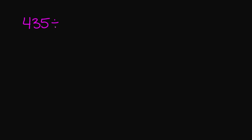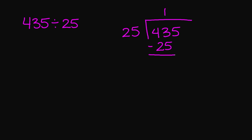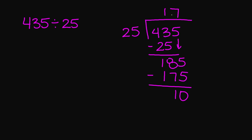Let's try 435 divided by 25. Let's set up the problem: 25 on the outside and 435 on the inside. 25 goes into 43 one time. 25 times 1 is 25. 43 minus 25 is 18. I'm going to bring down my 5. 25 goes into 185 seven times. 25 times 7 is 175. 185 minus 175 is 10. So your quotient is 17 with a remainder of 10.